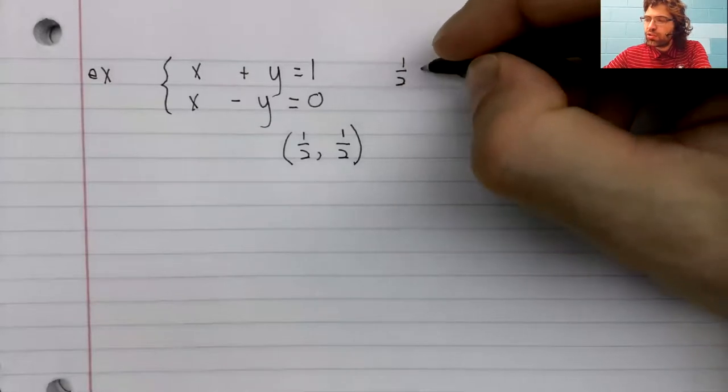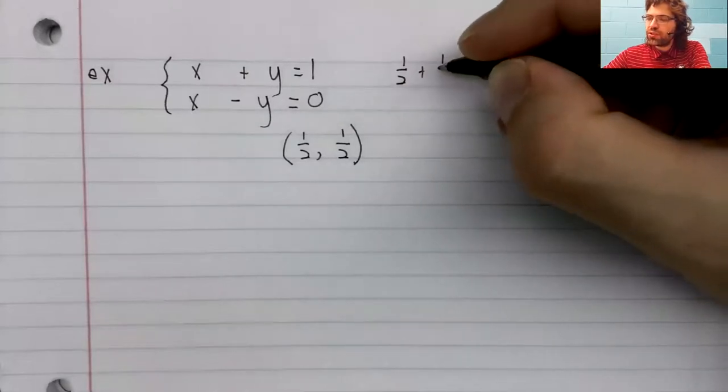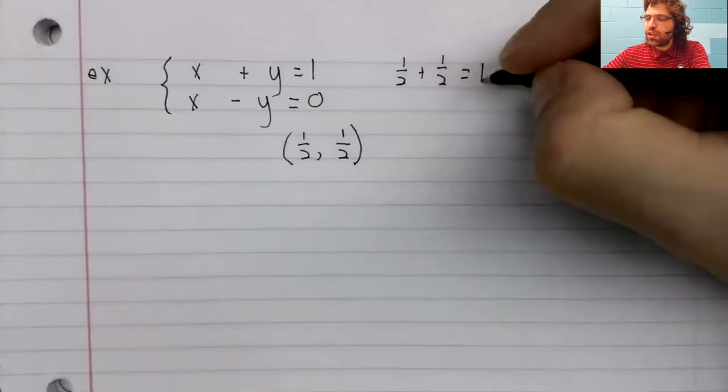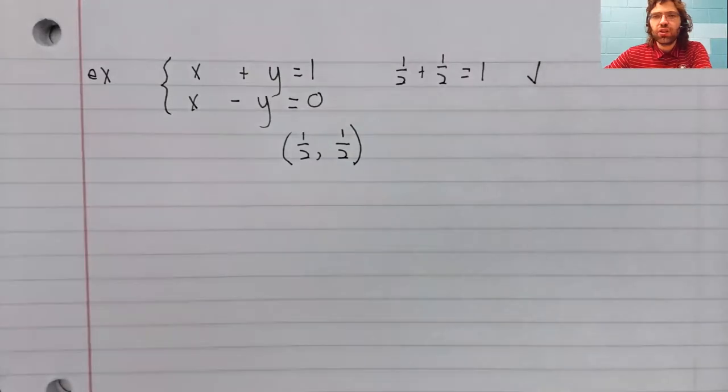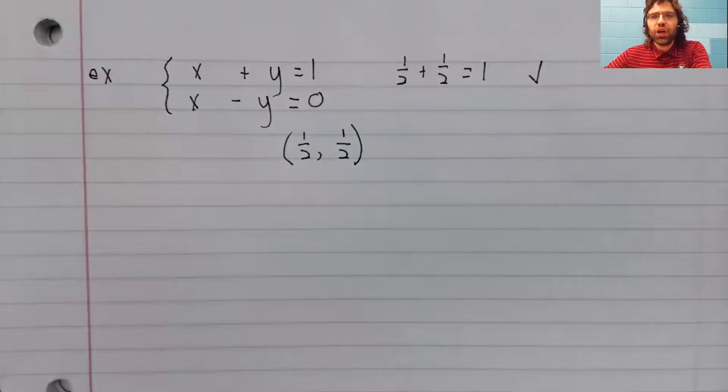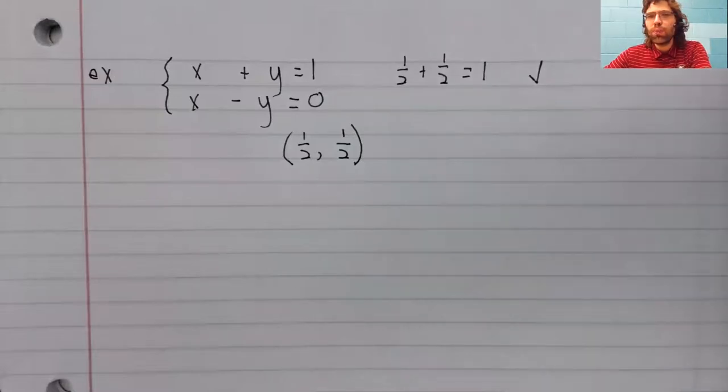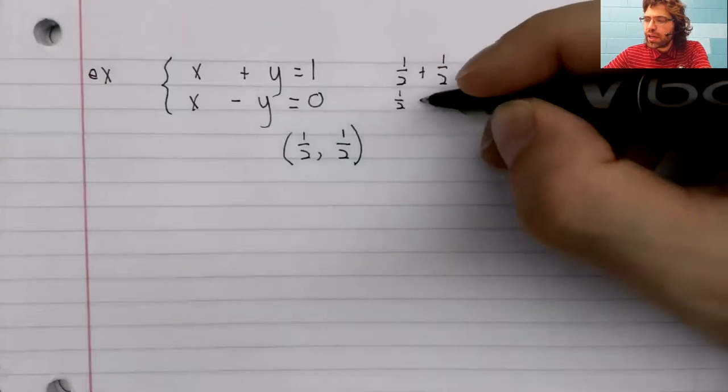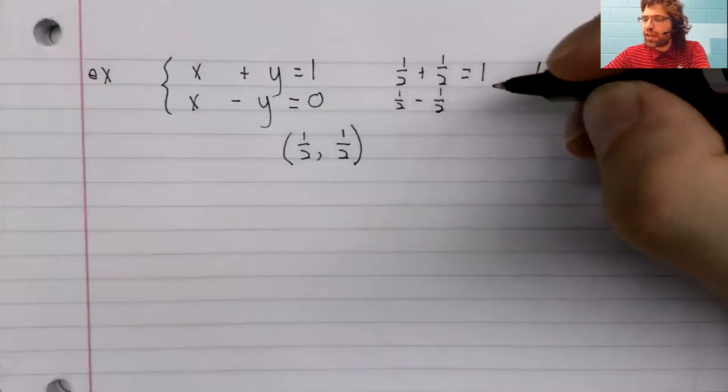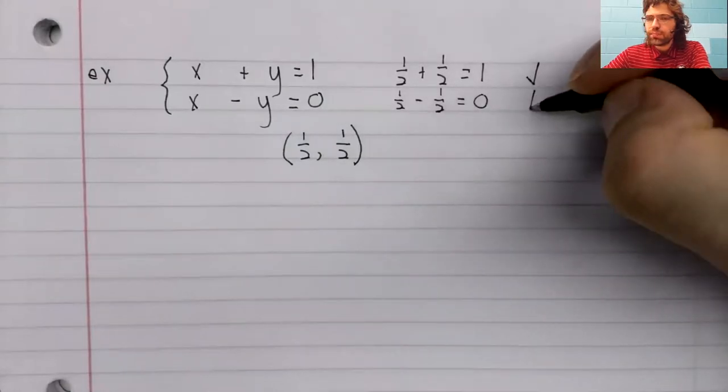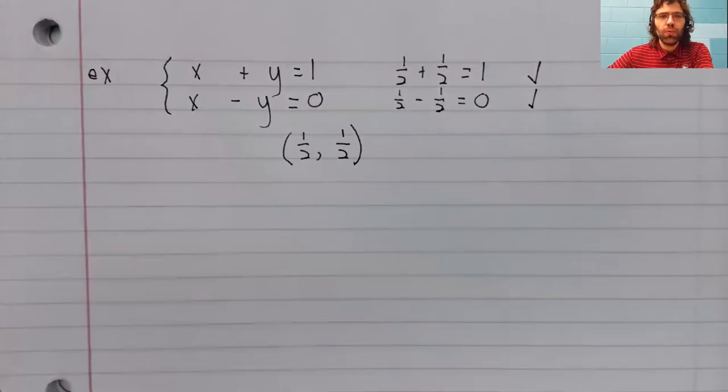To be a solution to a system, it has to make all of these equations true. One-half plus one-half does equal one. One-half minus one-half does equal zero.